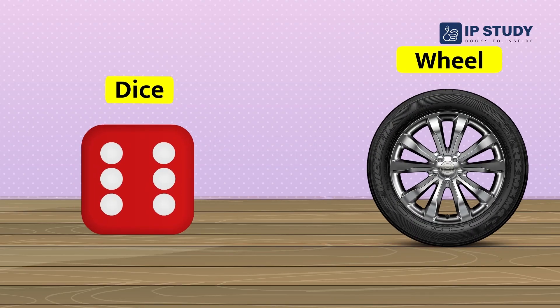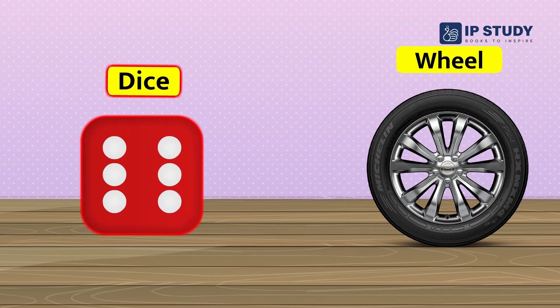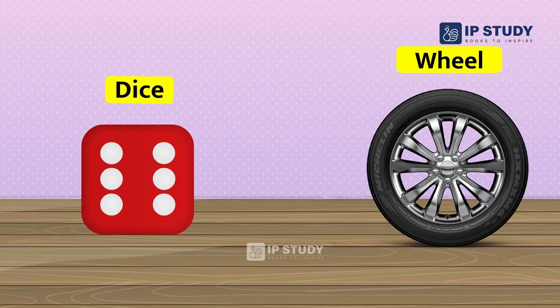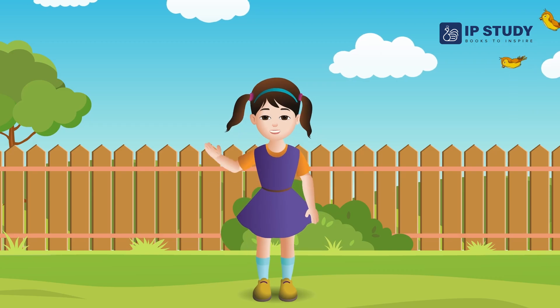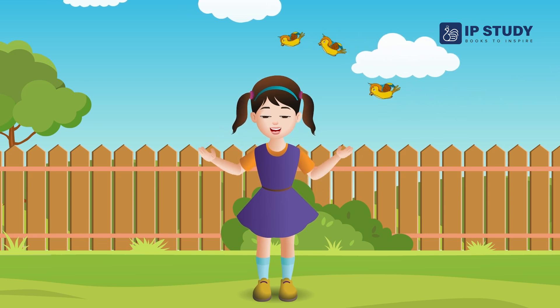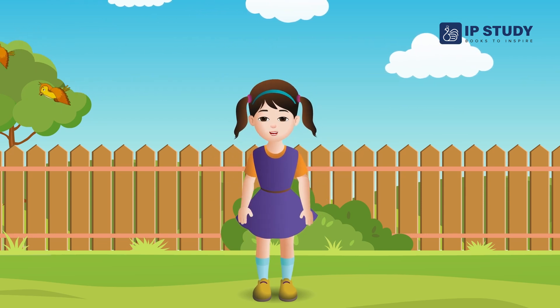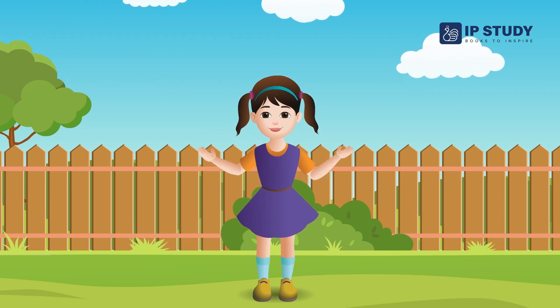Now, can you tell me which shape is a square and which shape is a circle? That's right — the left side shape is a square and the right side shape is a circle. Objects can also be compared using their shapes. We will learn about this when we meet next — till then, bye!